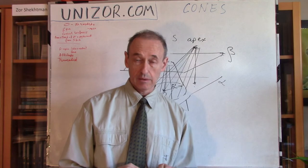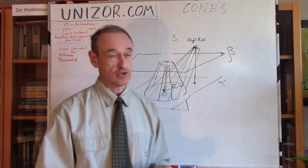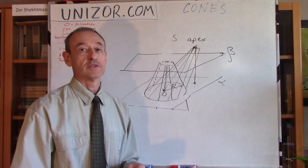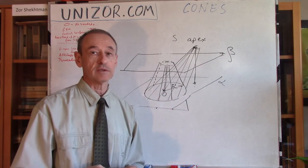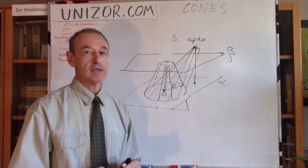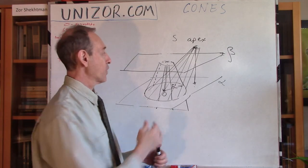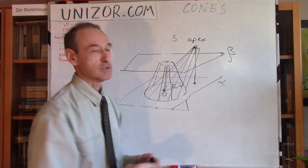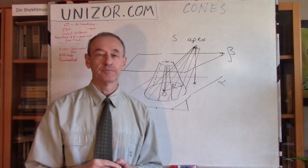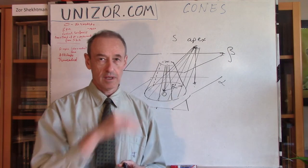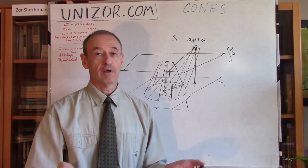By the way, that's an interesting observation. If this radius is equal to this radius, we will have a cylinder. So, you can consider a cylinder to be a particular case of truncated cone in case when both radiuses of the circles in both bases, top and bottom, are the same.